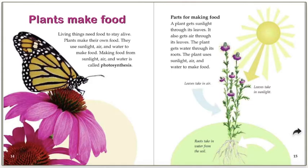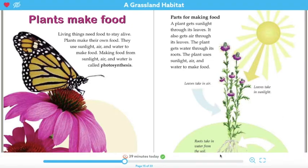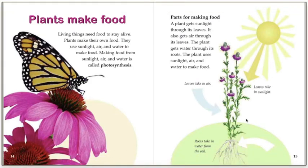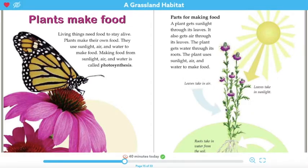Plants make food. Living things need food to stay alive. Plants make their own food — they use sunlight, air, and water to make food. Making food from sunlight, air, and water is called photosynthesis. Plants get sunlight through their leaves and also get air through their leaves. The plant gets water through its roots. You can see in this diagram that the water goes in through the roots, the leaves take in air, and the leaves also take in sunlight.